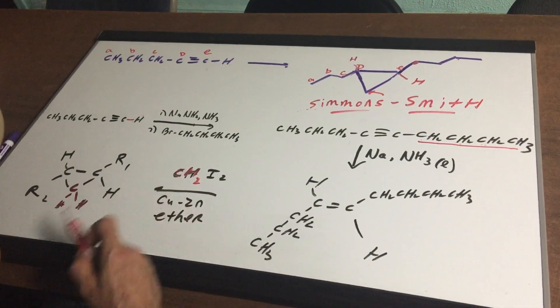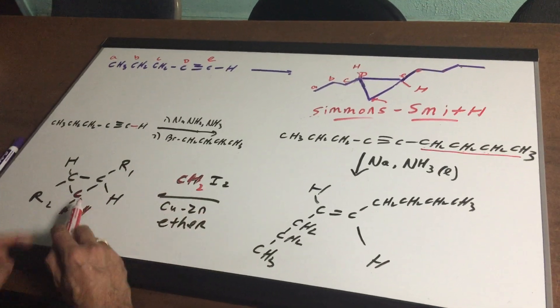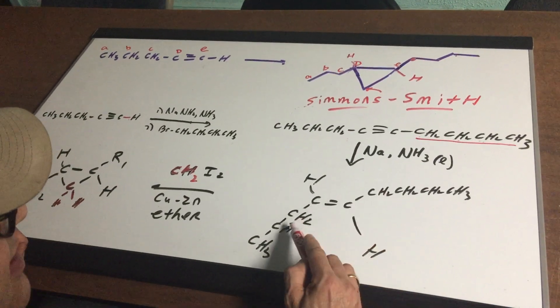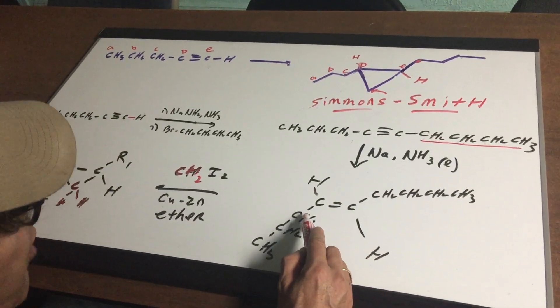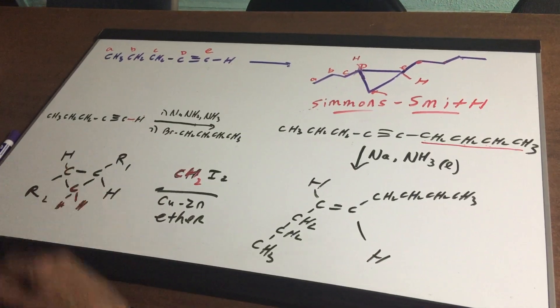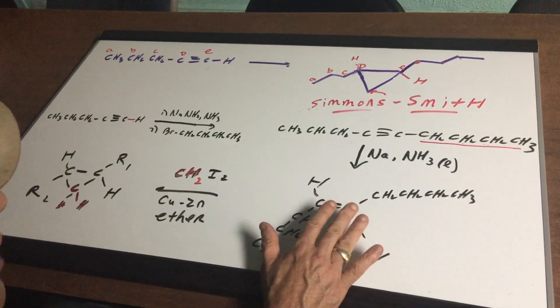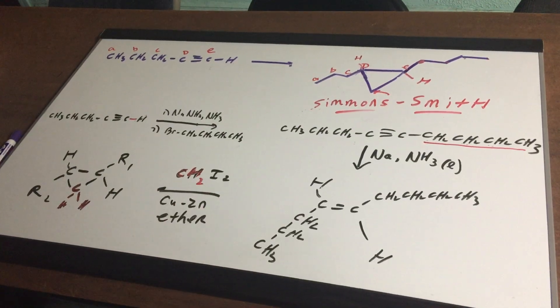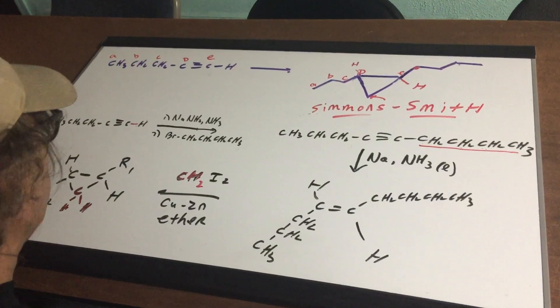Then I do my Simmons-Smith and I put it in red where I'm gonna insert the CH2 group so the CH2 group gets inserted and these two groups stay in the same position. I'll call the butyl group R1 and I'll call the propyl group R2 just so it doesn't look like a mess. So as you can see there's my final product in which I was able to treat this E-alkene with CH2I2 copper zinc and ether which is called a Simmons-Smith and I make my cyclopropane ring.